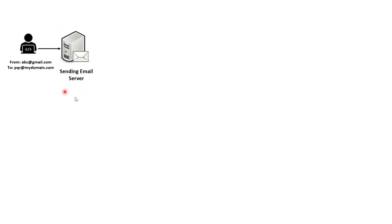Now let's see what happens when you click the send button. Let's say you are sending an email from abc@gmail.com and your recipient email address is pqr@mydomain.com. In this case the recipient is not from the same domain — they are not a Gmail user. When you compose an email and click send, it first goes to the sending email server. The function of the sending email server is to accept the email from the sender and route it to the correct destination using SMTP port 25.